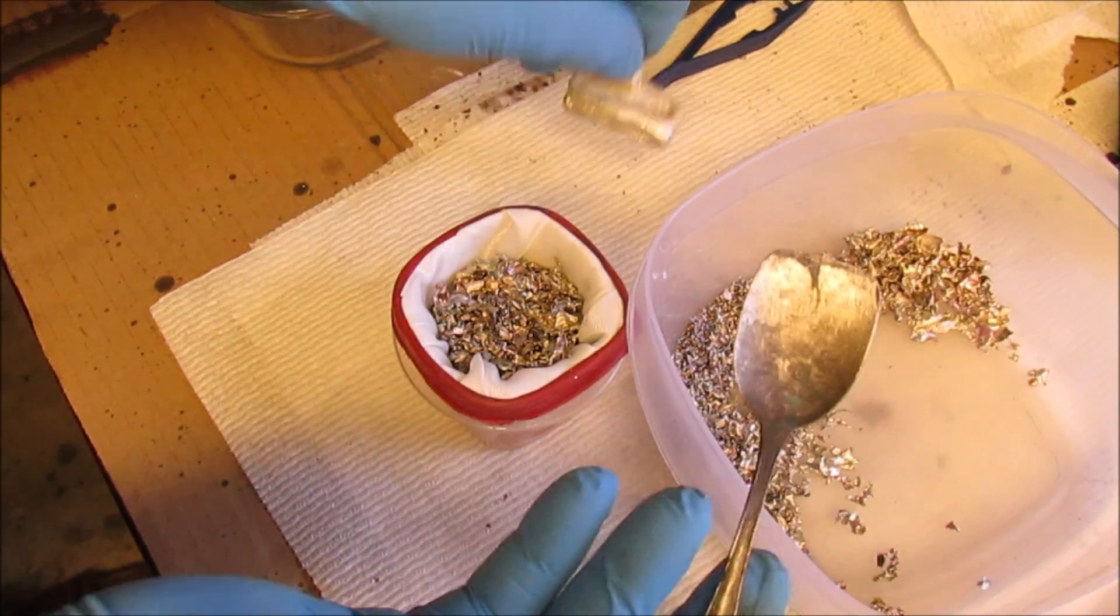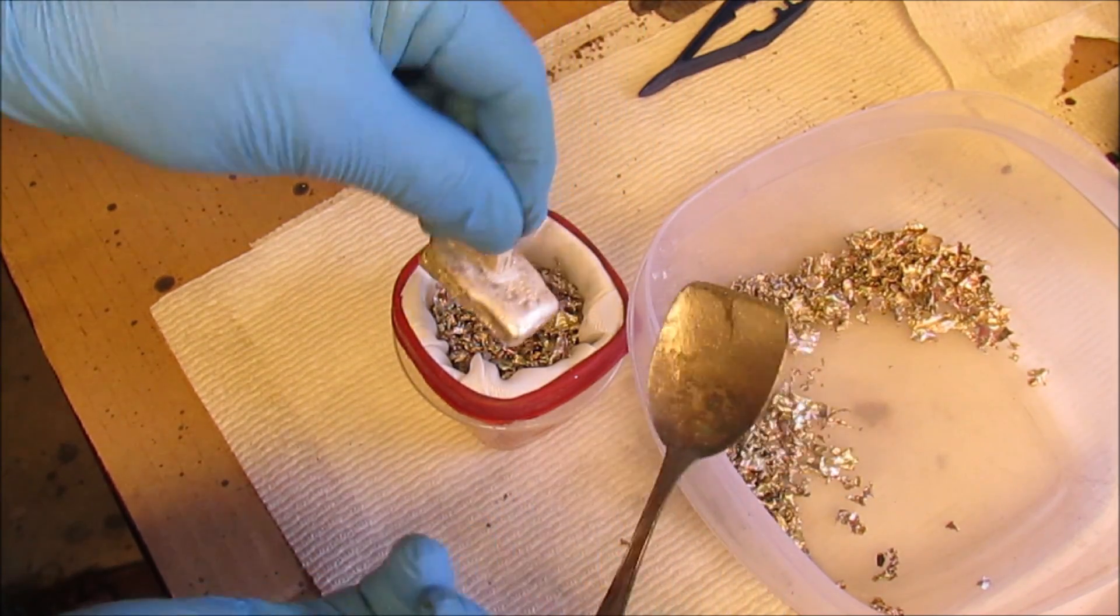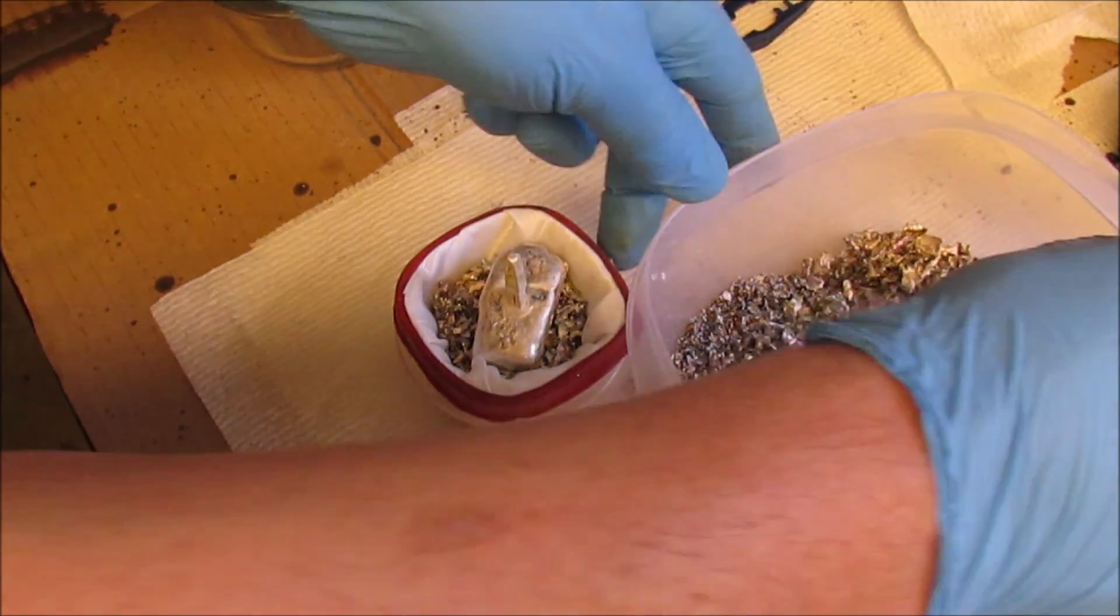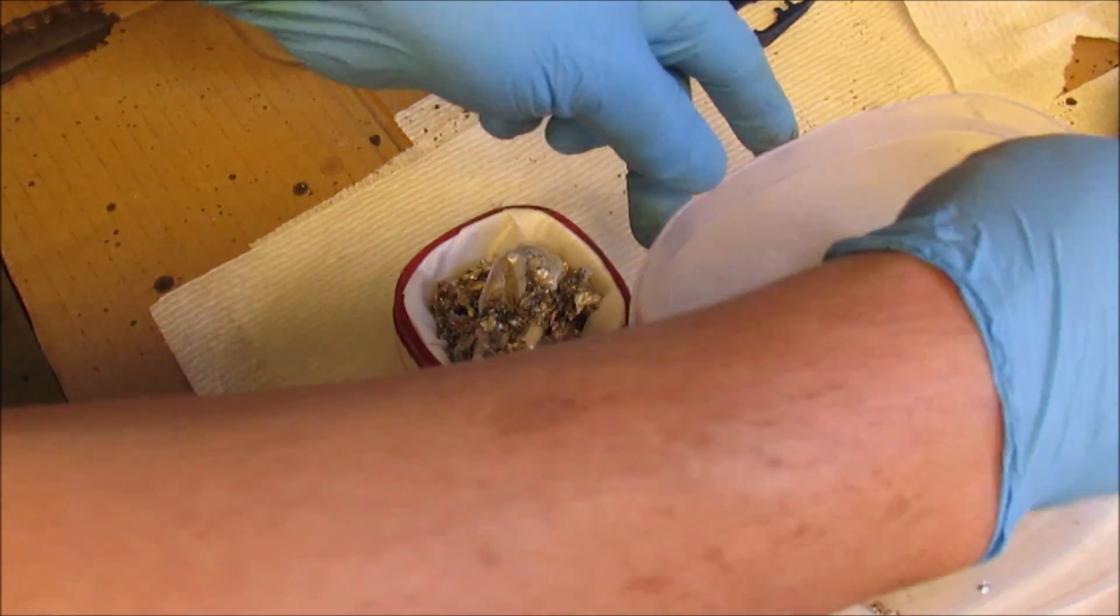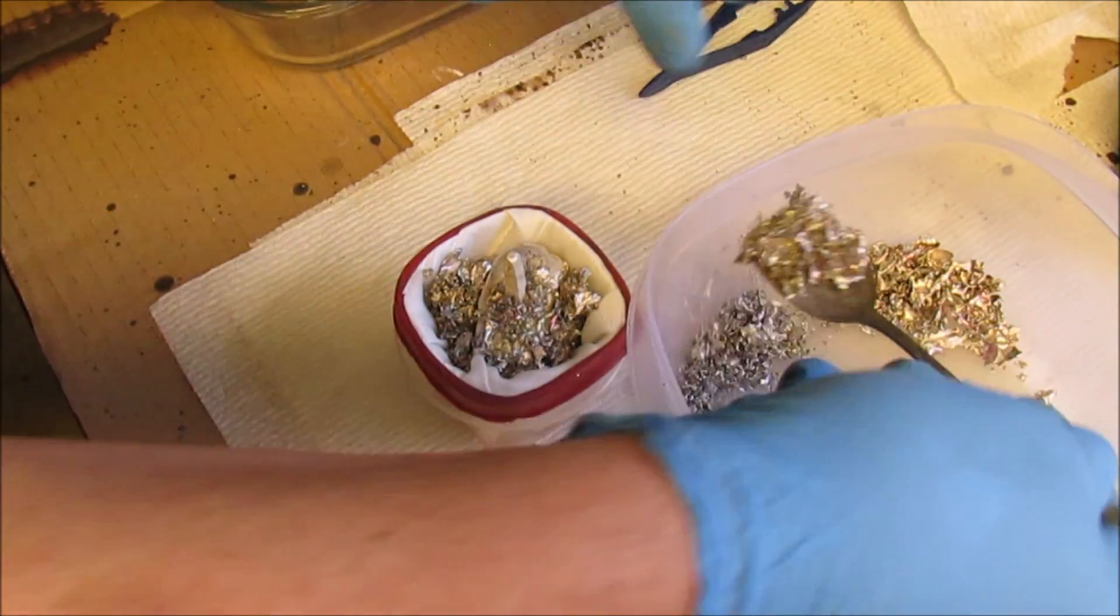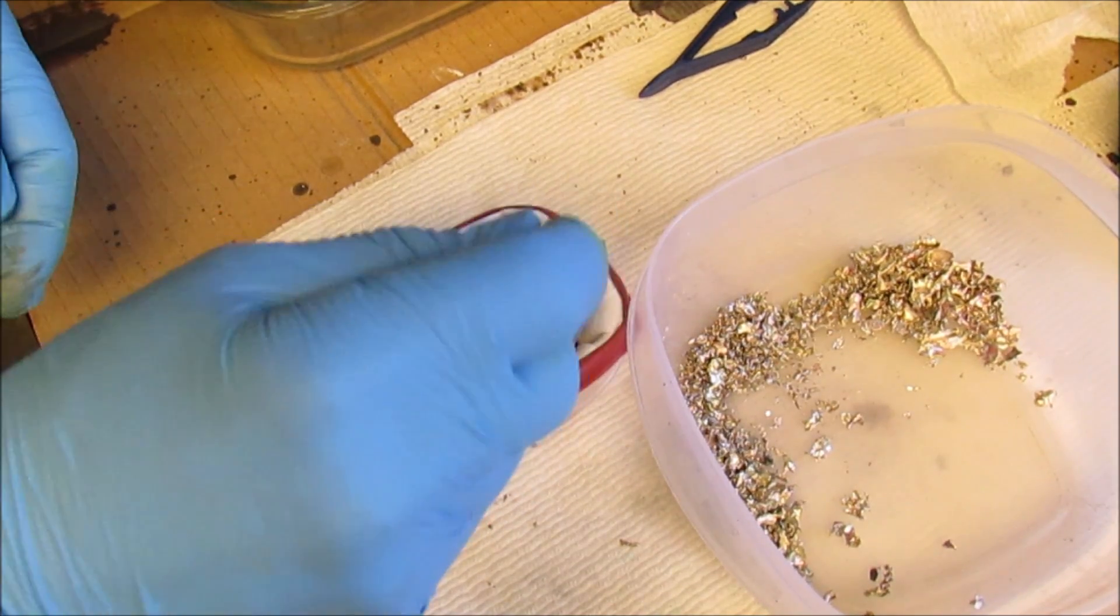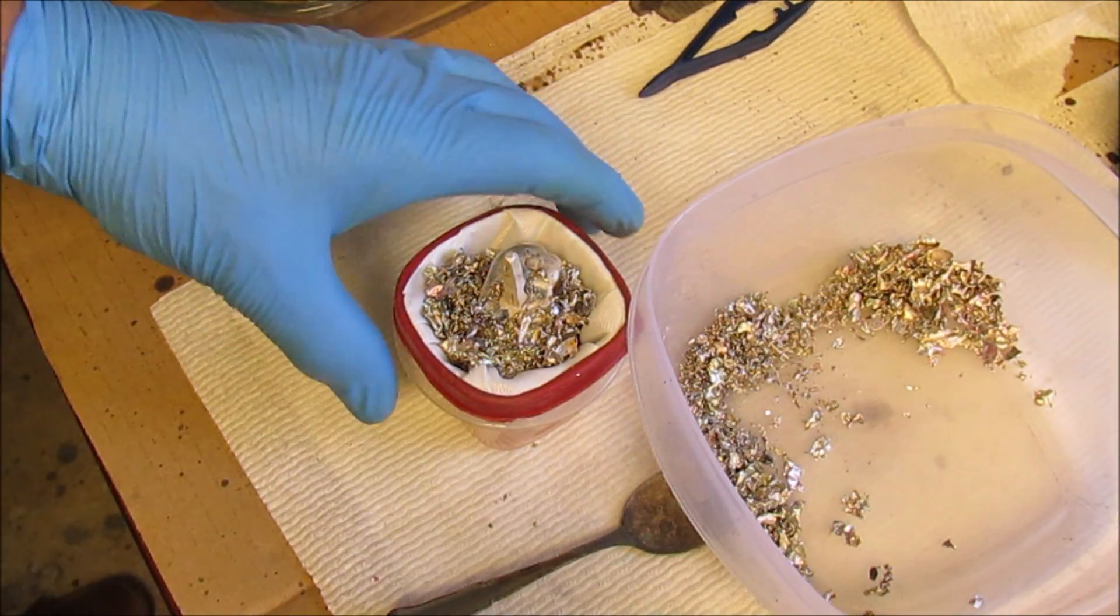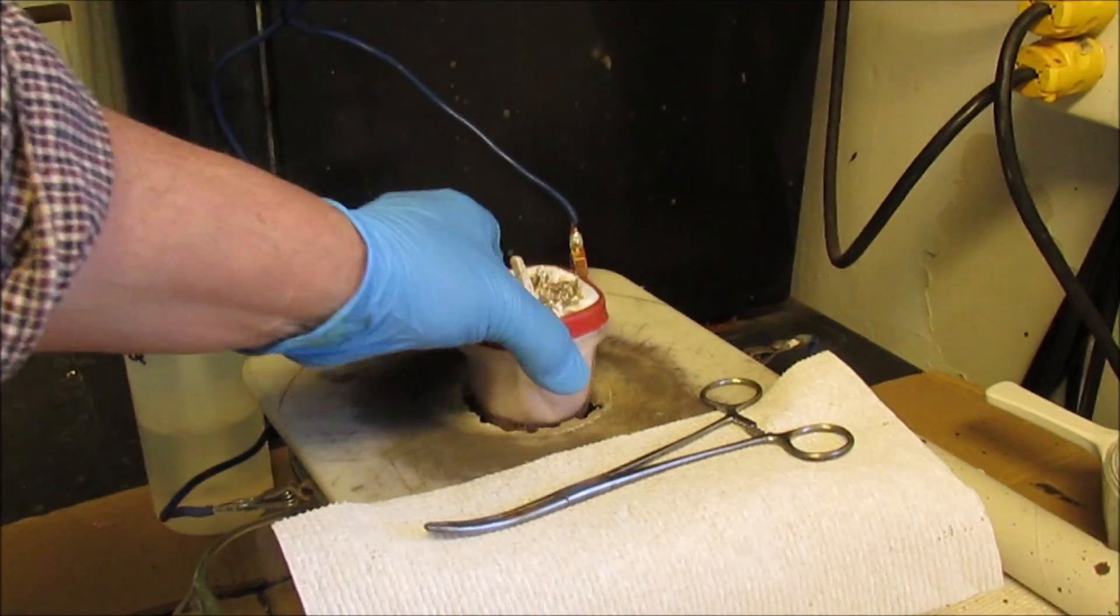Then I've got another anode bar here that I made from a previous video so I'm going to put that in there. I'm going to add a little bit more of the silver to kind of bury that thing so it gets a good contact all the way around. And then just take it and drop it into the silver cell here.